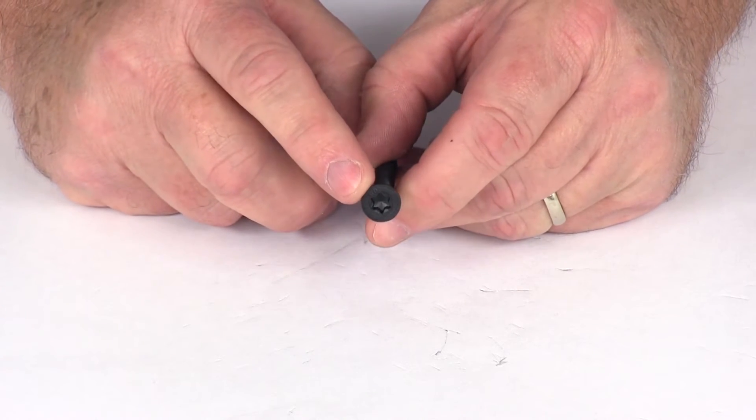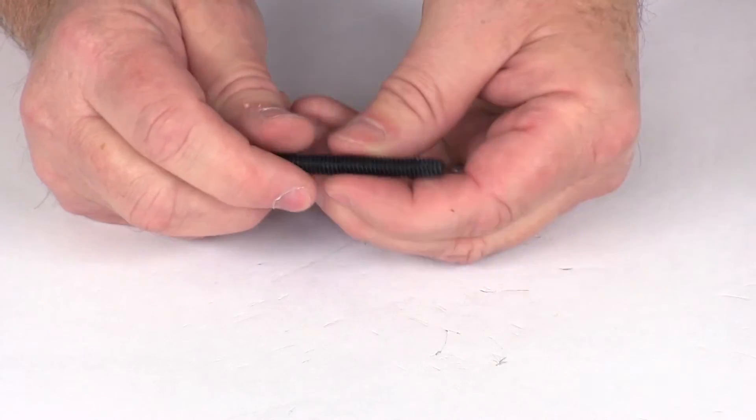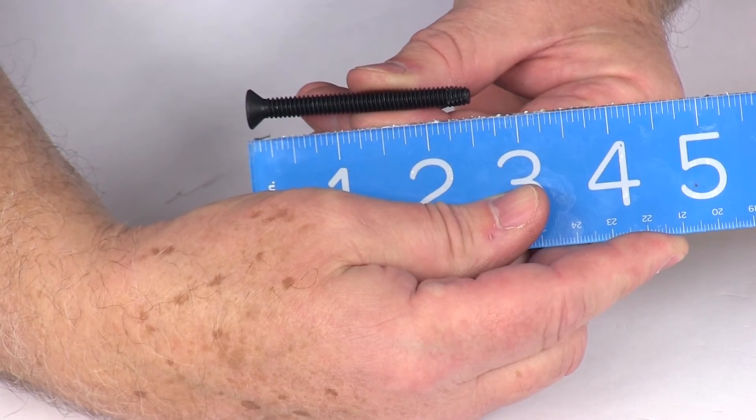The Torx head size on this is a T30. The diameter of the screw is a quarter inch in diameter and the overall length is going to be right at two and a half inches long.